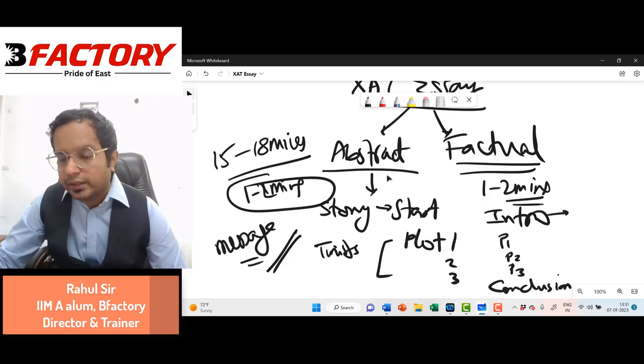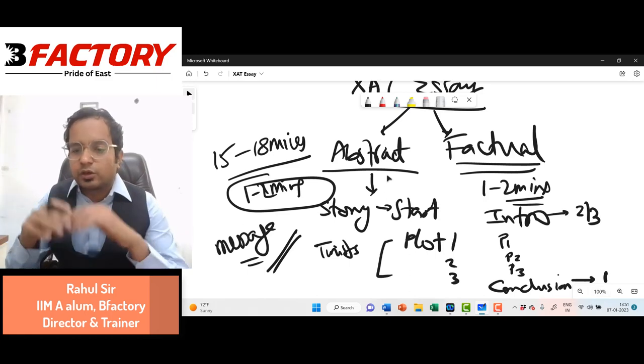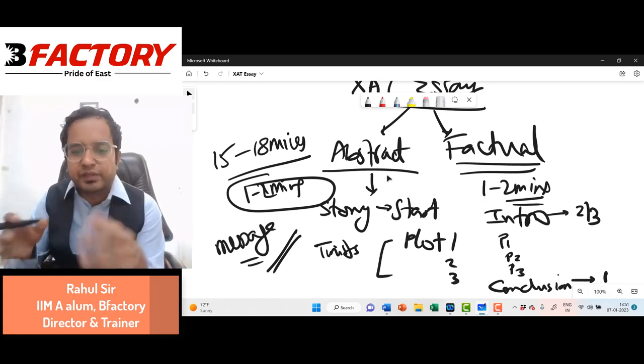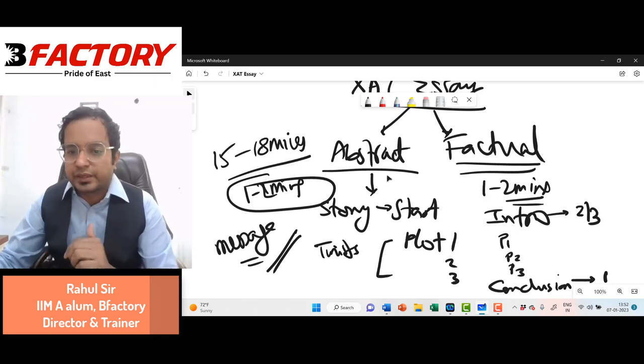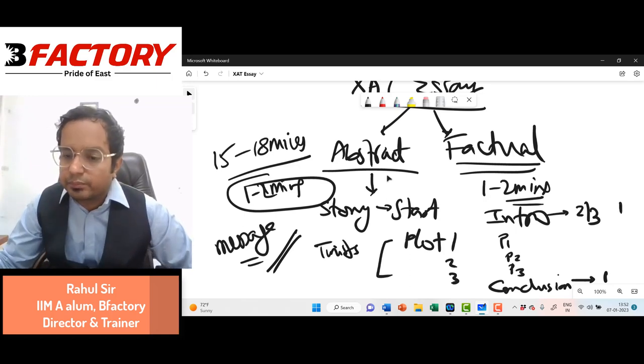If the intro is two to three lines, the conclusion could be just one line. If you're giving all details about the topic, you don't need to repeat everything in the end. So either introduction big or conclusion big. If introduction is a one-line introduction, maybe conclude big, summarizing everything.